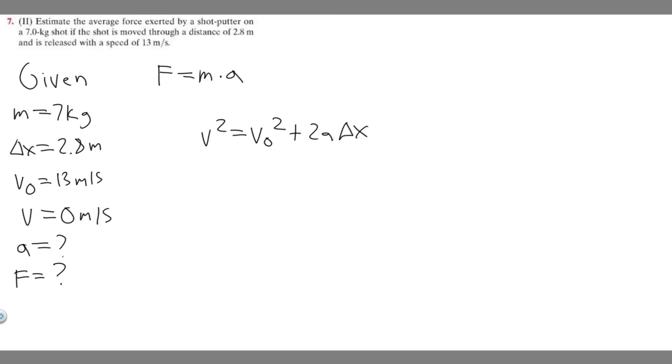So if we plug in everything, v is going to be 0. So 0 squared is just 0. So 0 equals v sub 0 squared. So v sub 0 is 13. So 13 squared plus 2 times a, because we don't know a. We're trying to find that times delta x, which is 2.8.